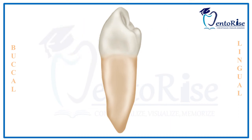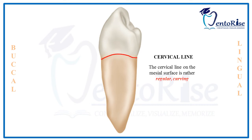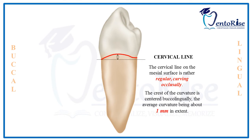The next heading is the cervical line. The cervical line on the mesial surface is regular and curves occlusally. The crest of curvature is centered buccolingually and the average curvature is about 1 mm in extent.